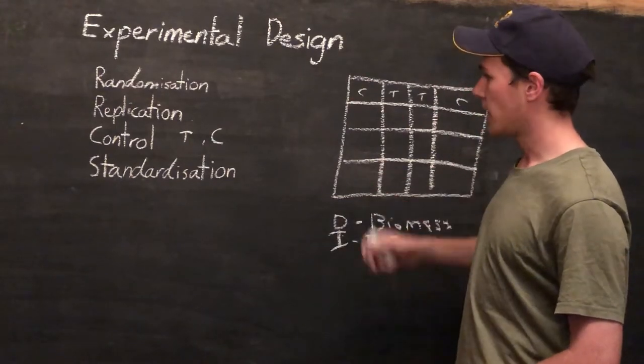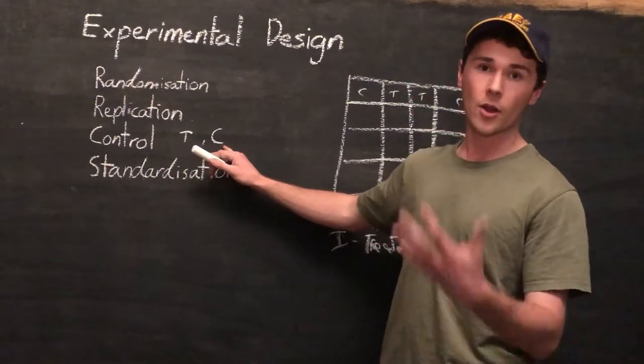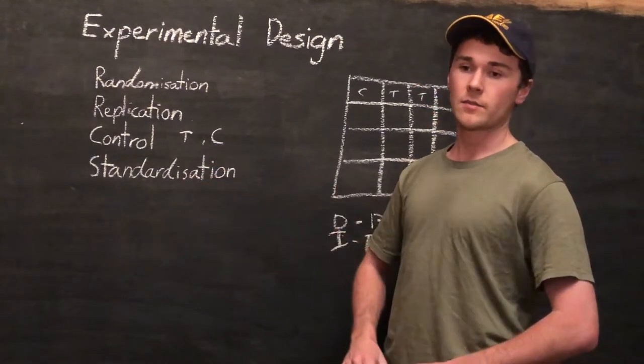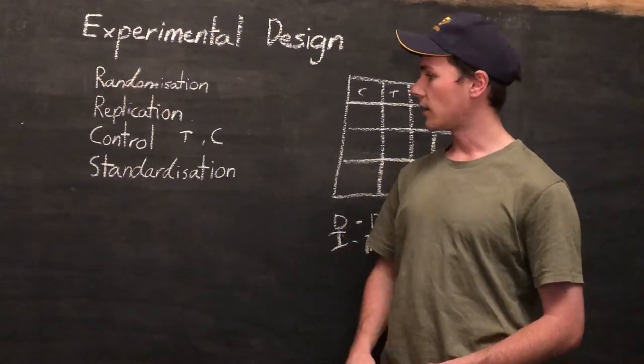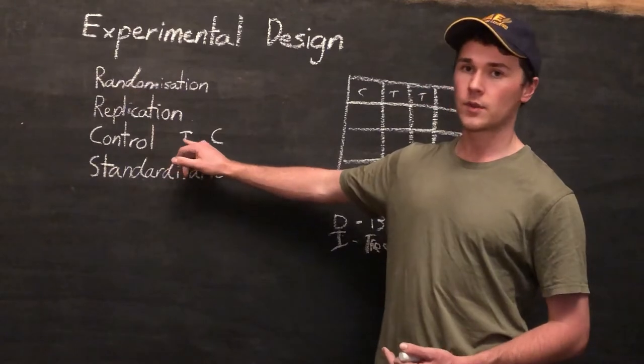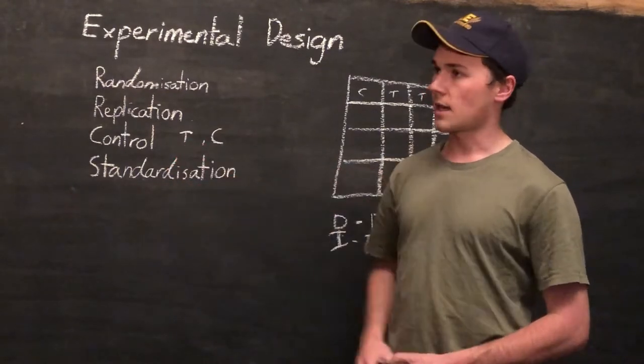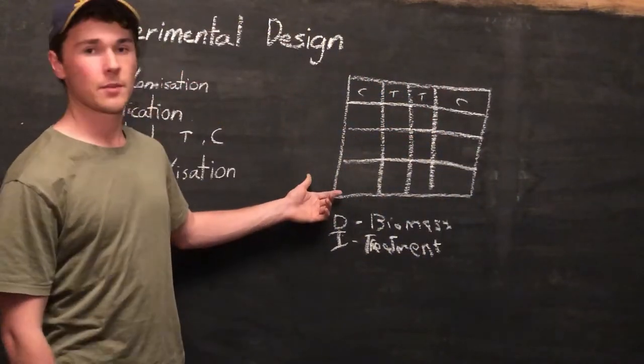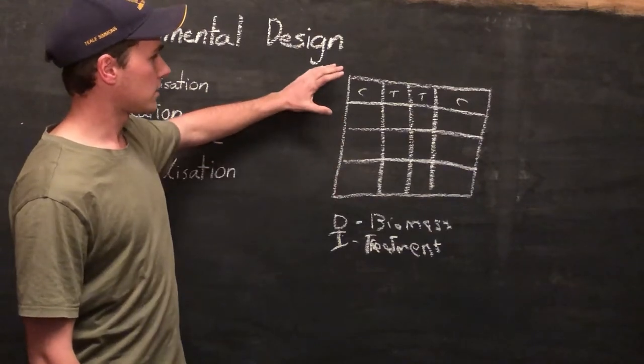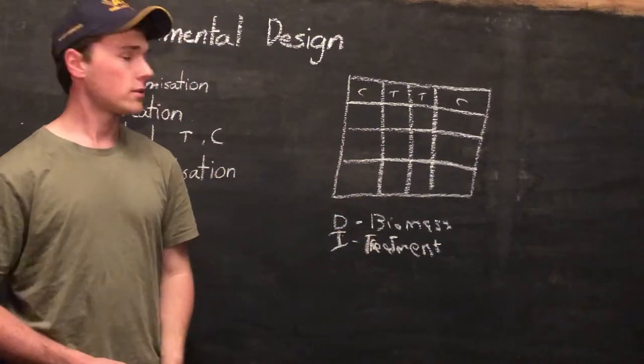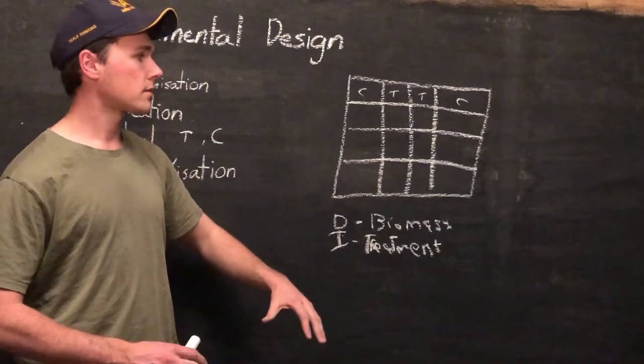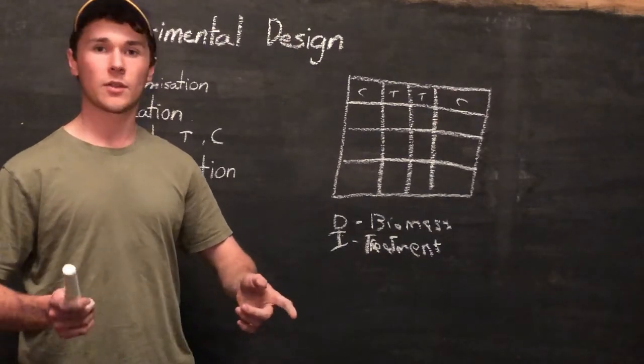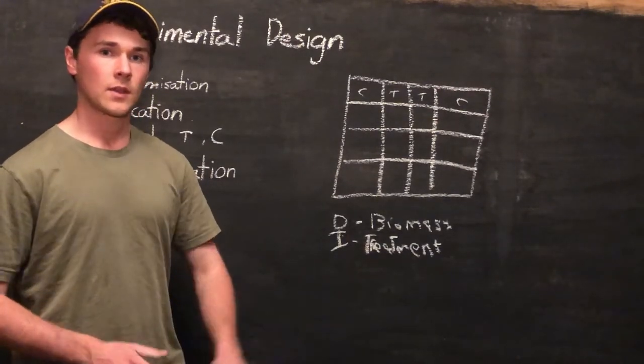We've got replication. That's good. We've got eight data points each. We've got a control which is no treatment being employed. Lastly, we've got standardization of conditions. Now this is making sure that everything else is constant in the experiment. And we're only testing the effect of the treatment. So this can include soil type. So we don't really have to think about it in this example too much because it's just one paddock. But if we had two paddocks, well, if we had two paddocks and we did treatment on one and control on the other, well, that might have two different soil types. And so that itself will have an effect on the outcome.